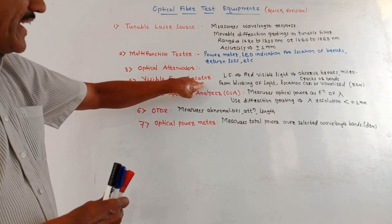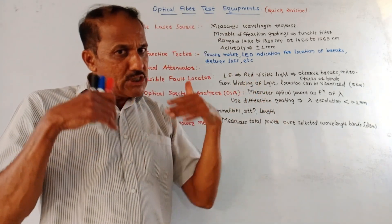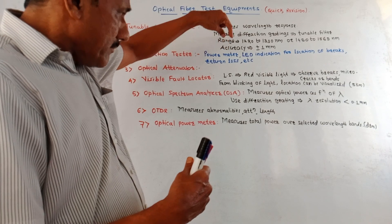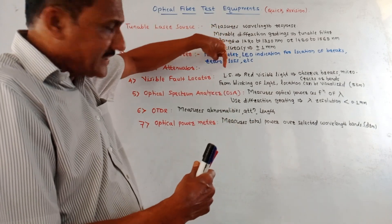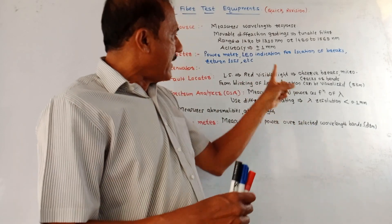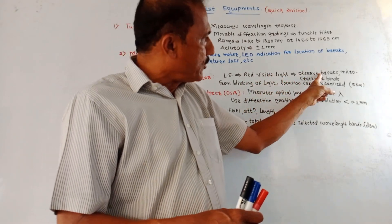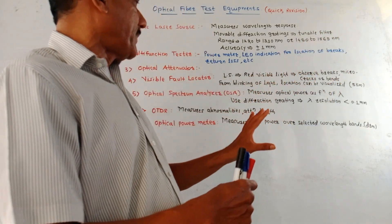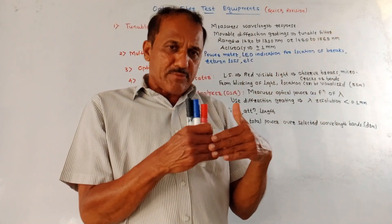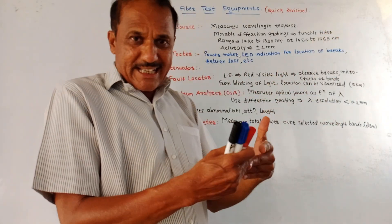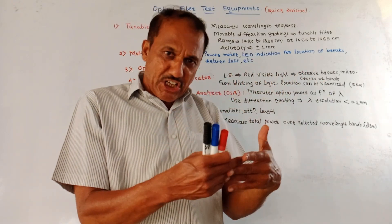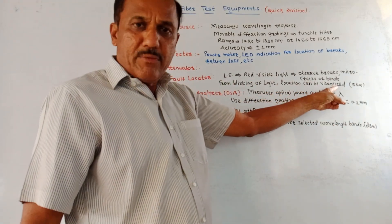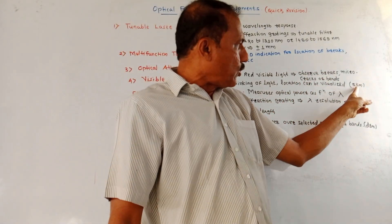Then visible fault locator — it gives visual indication if there is any fault in the optical cable. It contains a laser source (LS) which emits red visible light, used to observe breaks, micro-cracks, or micro-bends inside the optical cable. The light gets reflected from such bends or breaks and the reflected light gives an indication. If there is a blinking of light, then the location can be visualized. It gives visualization up to five kilometers distance.